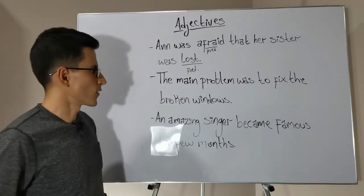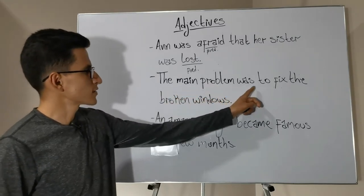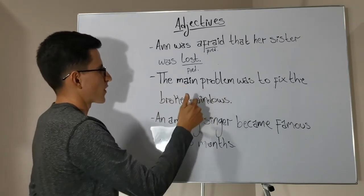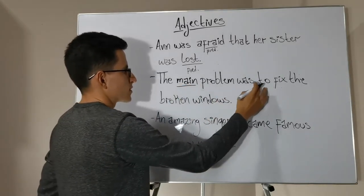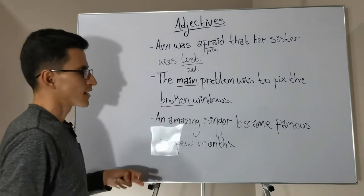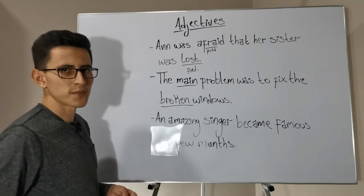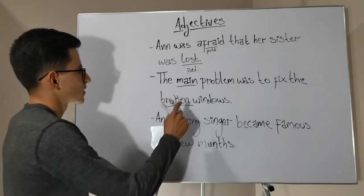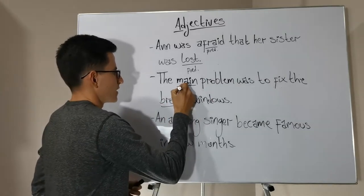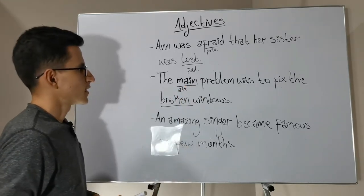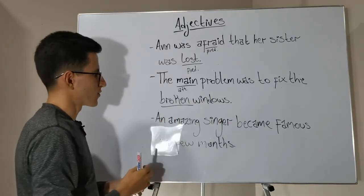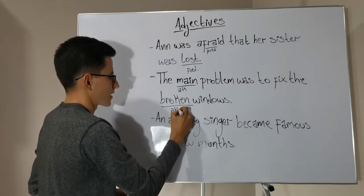Now let's analyze the second one: The main problem was to fix the broken windows. Let's try to find the adjectives. We have two adjectives here. In the case of main, the adjective precedes the noun, so we can say that it is an attributive adjective. Now in the case of broken, in the phrase to fix the broken windows, again it is preceding the noun, so we can say that it is also an attributive adjective.